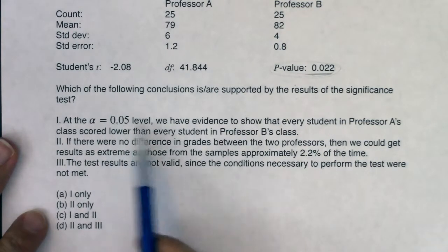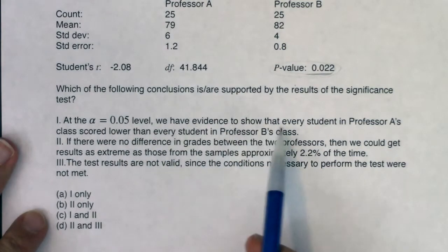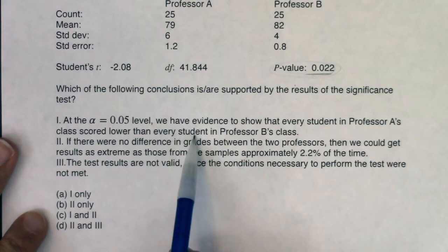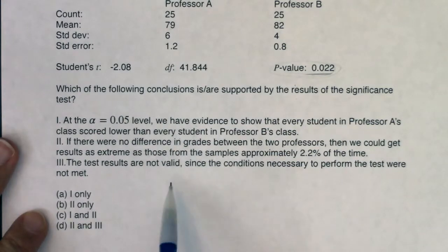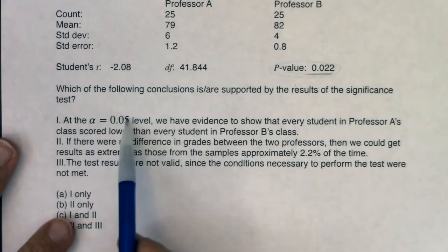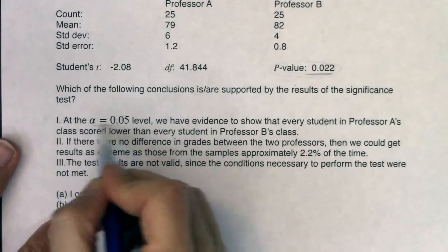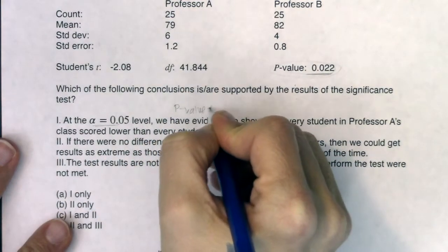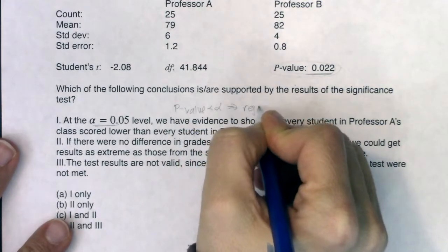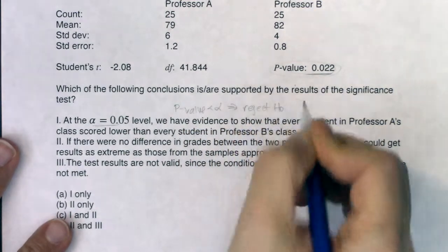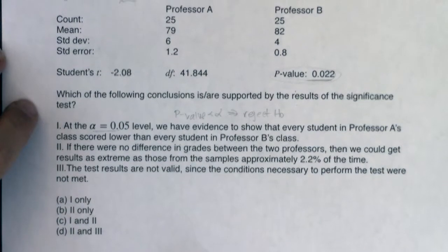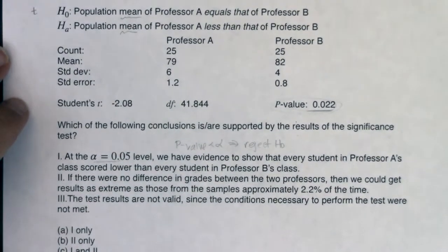It says at the five percent level we have evidence to show that every student in Professor A's class scored lower than every student in Professor B's class. All right that sounds good but there's something wrong with this sentence. All right so I'll give you that if you look at the five percent alpha level right you would say hey Miss A p-value is less than alpha so I'm going to reject H naught. And I agree with you there but be careful.